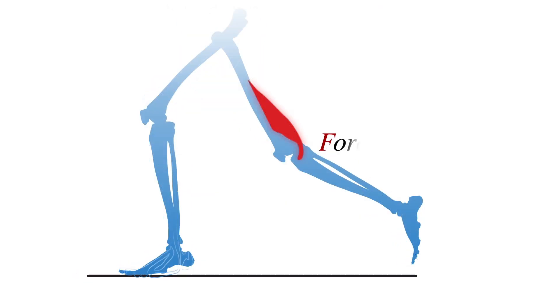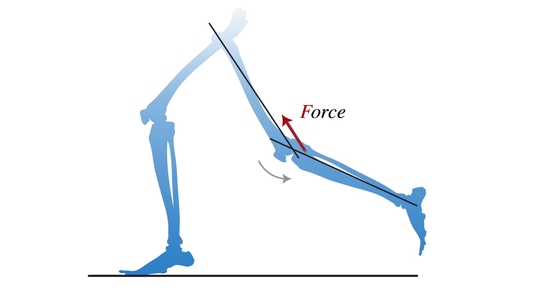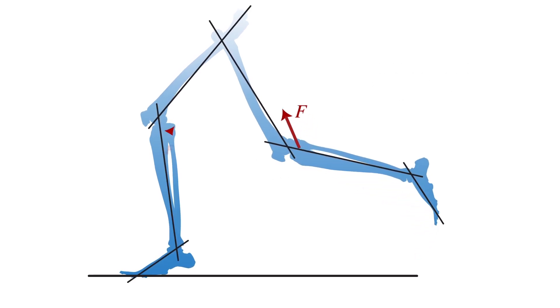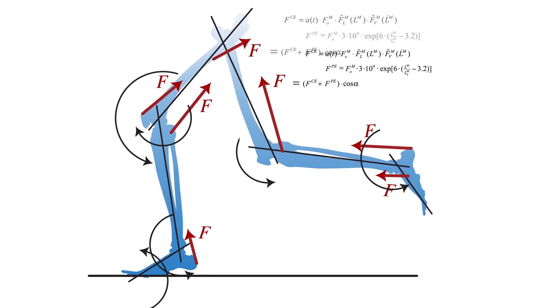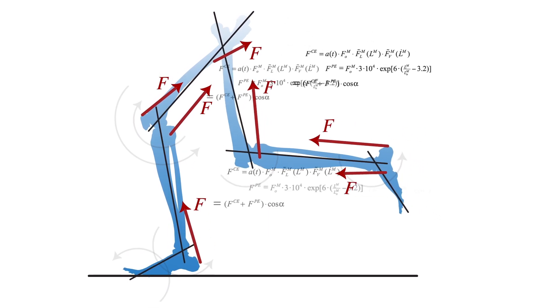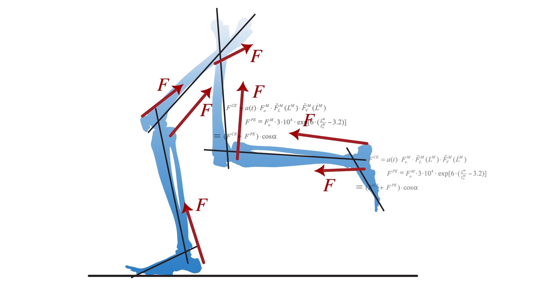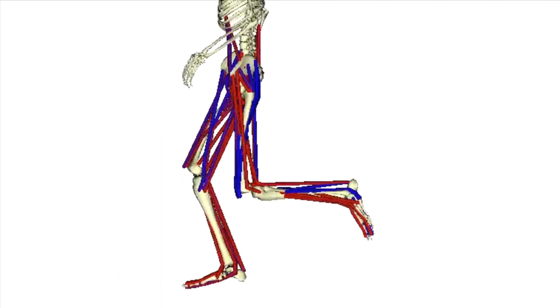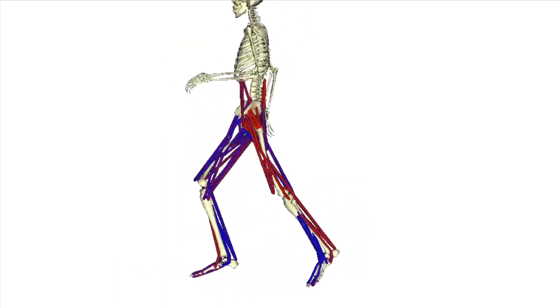Each muscle in the body generates a force, pulling the bones it's connected to closer together. As they are activated, other muscles generate different forces. We calculate all the different forces generated by all the different muscles as they are activated and deactivated. This allows us to simulate and study many motions like walking or running.